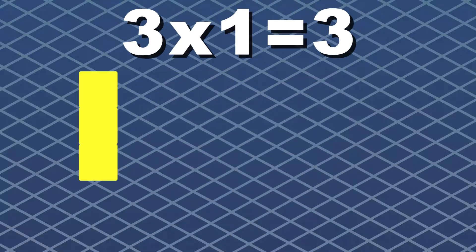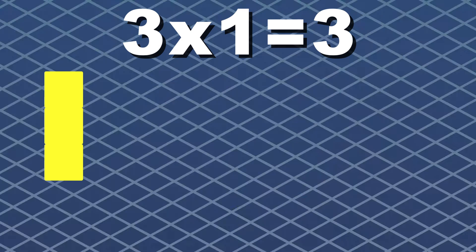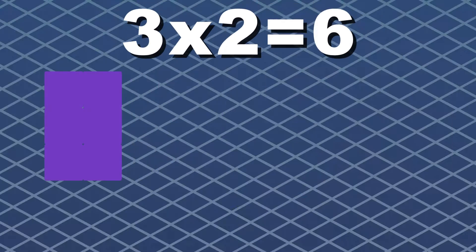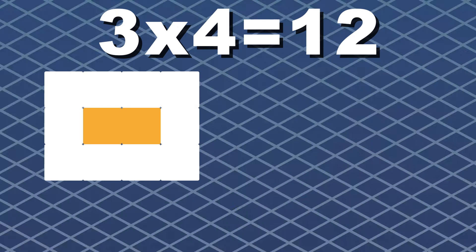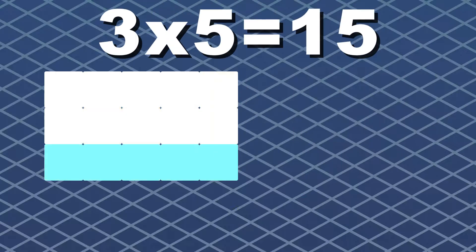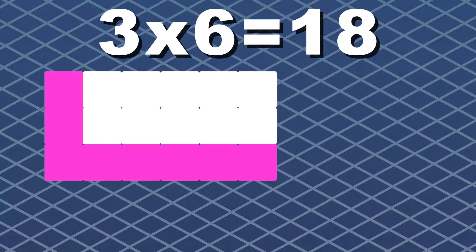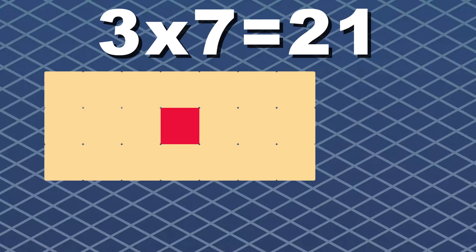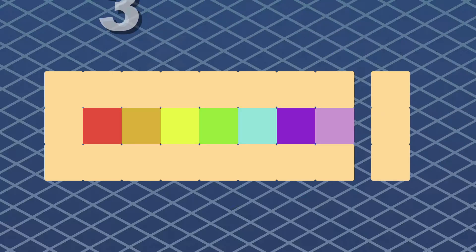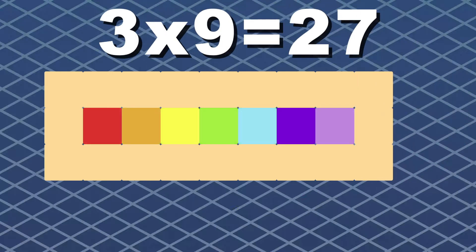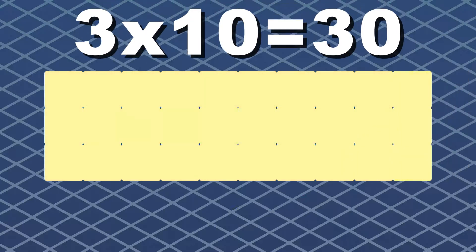Again: three times one equals three, and three times two equals six. Three times three equals nine. Three times four equals twelve. Three times five equals fifteen, and three times six equals eighteen. Three times seven equals twenty-one. Three times eight equals twenty-four, and done. Three times nine equals twenty-seven. Three times ten equals thirty.